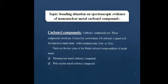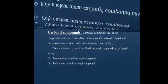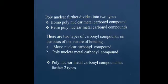Mononuclear means there is only one metal as the central atom, for example nickel. Polynuclear means more than one metal is attached as the central metal. Polynuclear is further divided into two types: homo polynuclear and hetero polynuclear. Homo means same nature of metal, and hetero means different nature of metal.